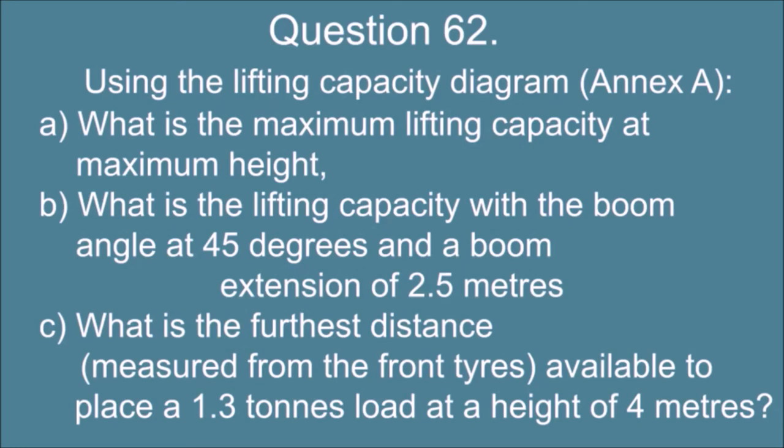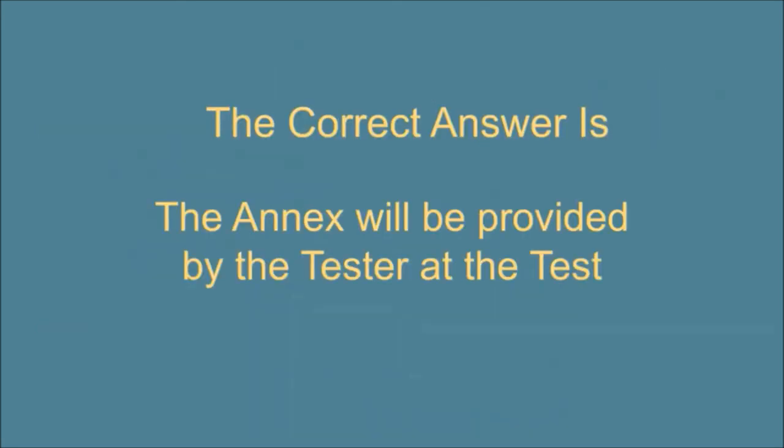Question 62. Using the lifting capacity diagram Annex A, A. What is the maximum lifting capacity at maximum height? B. What is the lifting capacity with the boom angle at 45 degrees and a boom extension of 2.5 meters? And C. What is the furthest distance, measured from the front tires, available to place a 1.3 tons load at a height of 4 meters? The correct answer is: The annex will be provided by the tester at the test.